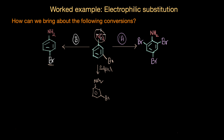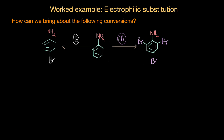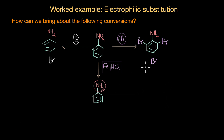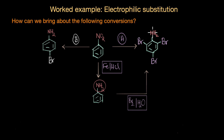Instead, we first need to convert nitrobenzene to aniline via reduction using Fe/HCl or Sn/HCl, converting NO2 to NH2. Then we subsequently perform bromination. If we treat aniline with Br2 in the presence of H2O, we get poly-bromination or a multi-substituted product.